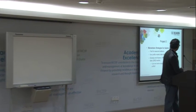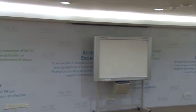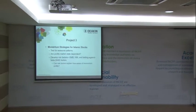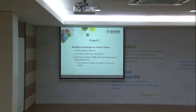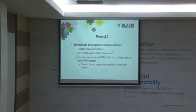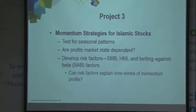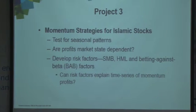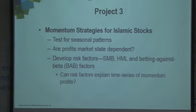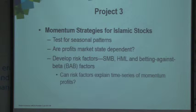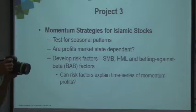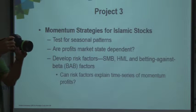We also compute the small-minus-big, high-minus-low book-to-market ratio, and betting-against-beta factors. We have three market risk factors. The idea is that any profits you get should be put to a test of whether the profits you are making are due to the risk you are taking, or is it due to the mispricing of stocks. That is a central, fundamental question in empirical finance.